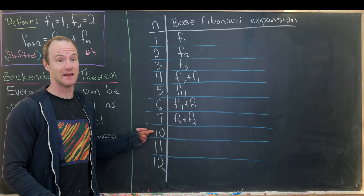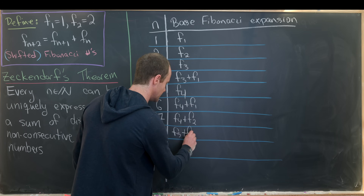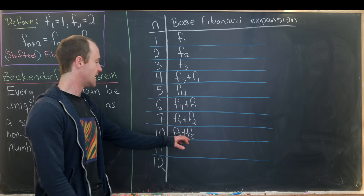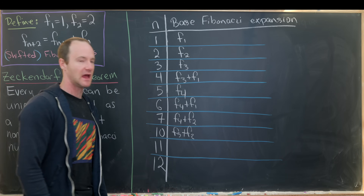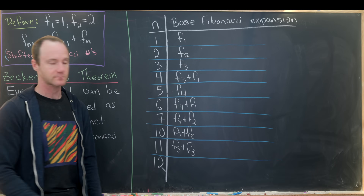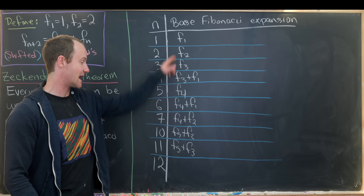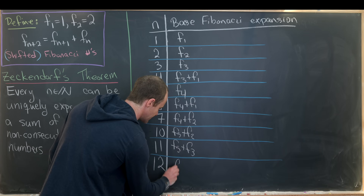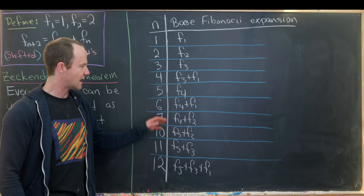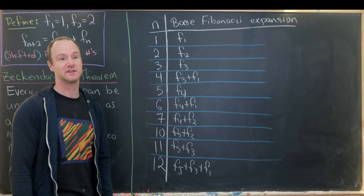Let's move on to 10: that's F₅ plus F₂, since F₅ is 8 and F₂ is 2, giving 8 plus 2 equals 10. Then 11 is 8 plus 3, so F₅ plus F₃ — still non-consecutive. And 12 is one more, but we can add F₁ because they'll remain non-consecutive, giving F₅ plus F₃ plus F₁. That's a big enough illustration to see how this seems to be possible, so let's jump into the proof.